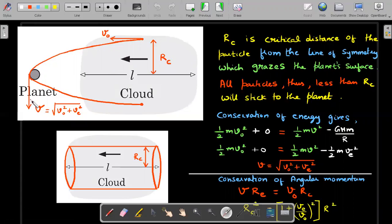RC is the critical distance of the particle from the line of symmetry. This is the line of symmetry which grazes the planet surface. All particles less than RC will stick to the planet. So my argument is if this particle grazes, everything within lesser distances from this particular point, because they are at a greater potential energy, will definitely hit this particular planet and the planet collects those dust particles. So if I can get this RC and look at the clouds diagram separately, all the particles which are actually in the cylindrical volume of radius RC is the mass of the particles that are required for this particular problem.